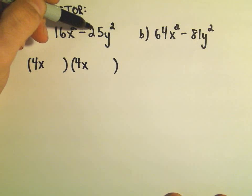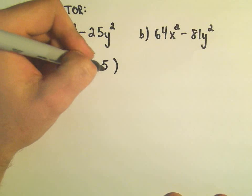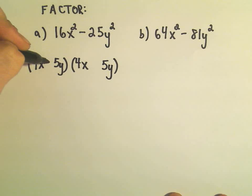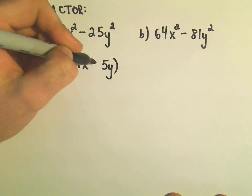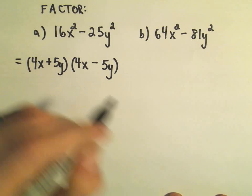Then I do the same thing for 25y squared. I would simply need 5y and 5y. And the formula says you stick a positive and a negative in between the terms, and that's how it factors.